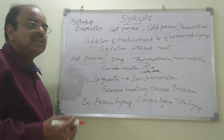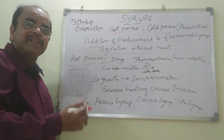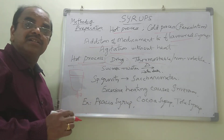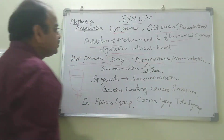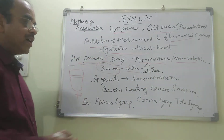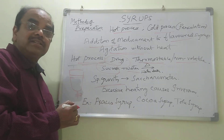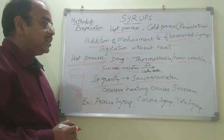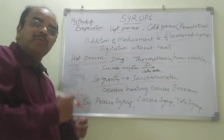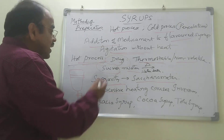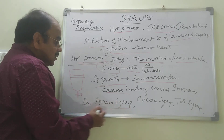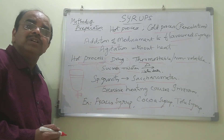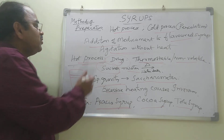For the hot process, the drug must be thermostable and non-volatile. Using a water bath, temperature is up to 100°C, so vitamins, proteins, and enzymes may lose their properties at such temperature — don't use this method for those. Take the sucrose, add water, and heat on a water bath. The specific gravity of the preparation is measured using a saccharometer. Excessive heating may cause inversion, giving more sweetness, and caramelization is possible. Examples prepared by this method: acacia syrup, cocoa syrup, and tolu syrup.